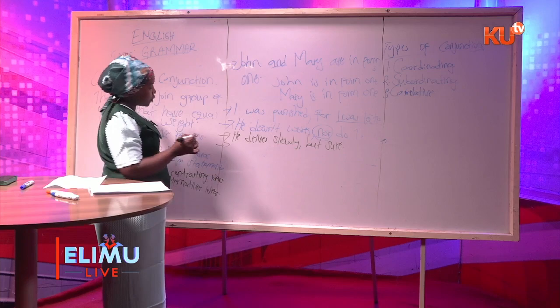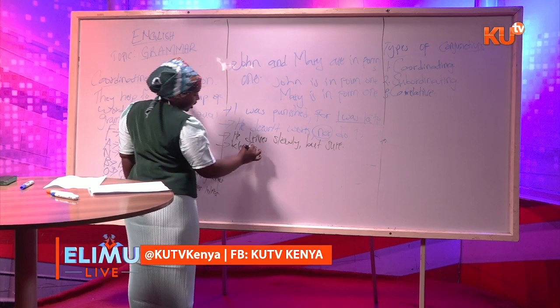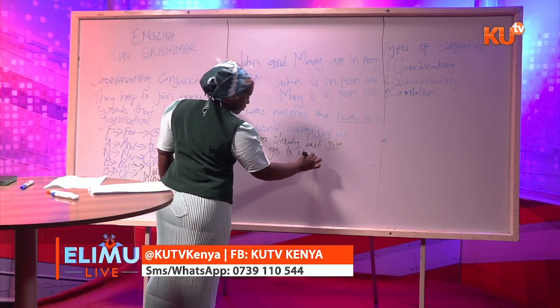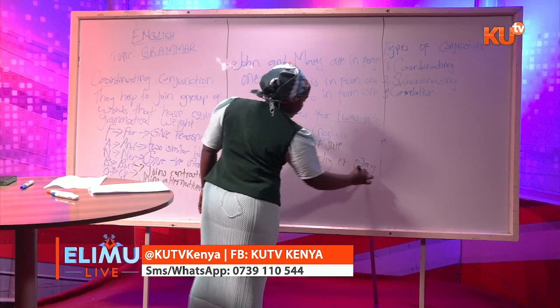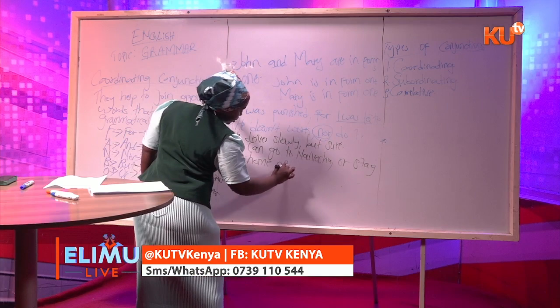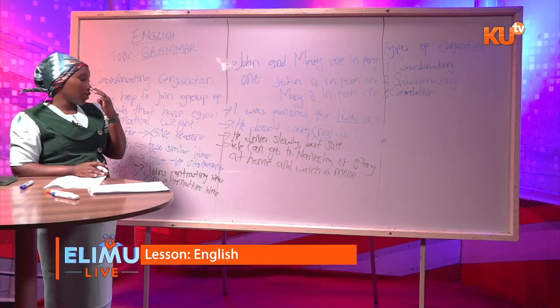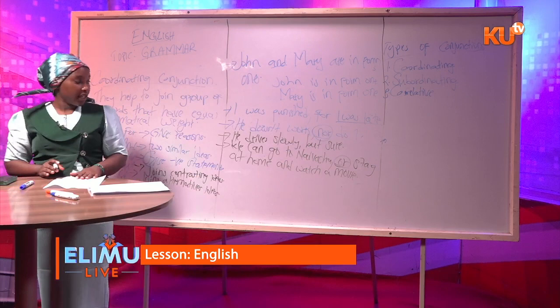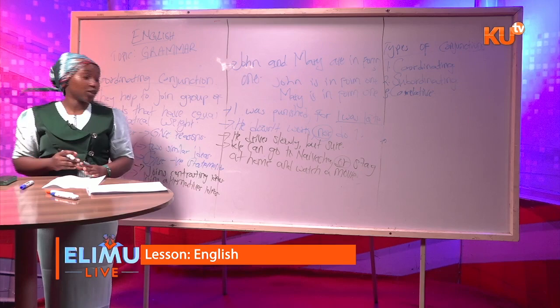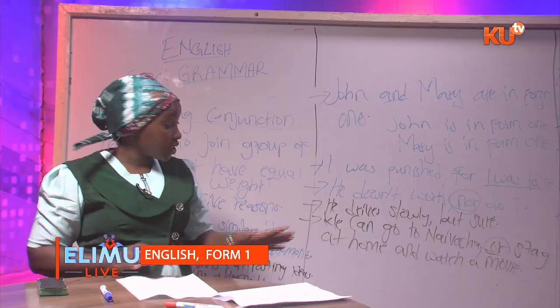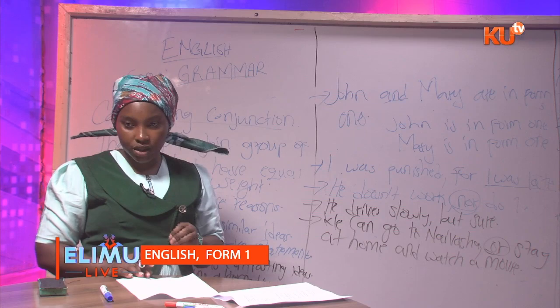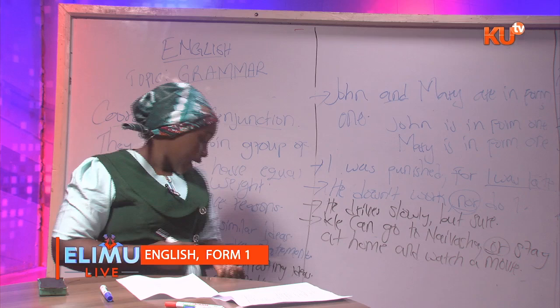In the sentence 'we can go to Naivasha or stay at home and watch a movie,' the conjunction 'or' is bringing out alternatives. We have two alternatives: go for a trip to Naivasha, or stay at home and watch a movie. You can choose — do you want to go to Naivasha, or do you want to stay at home?